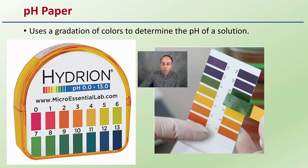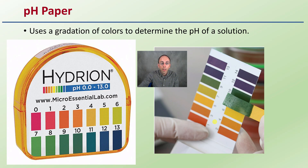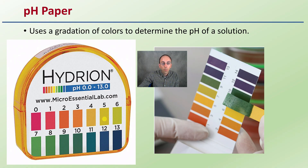pH paper is utilized a little more because it gives you an idea of the exact pH that the substance is. Instead of just acid or base, it'll give you within reason — within about a point — the pH depending on the color gradations. Hopefully you're good at seeing well-defined colors, and you can match up to see what the pH is of the solution you're dealing with.